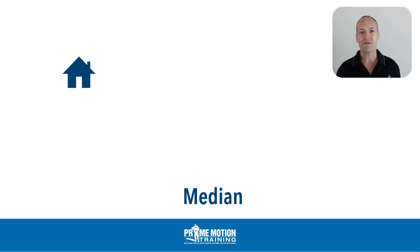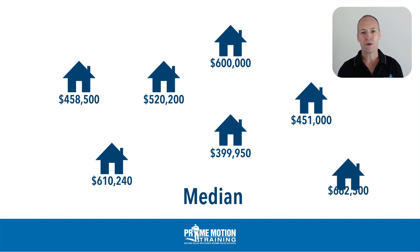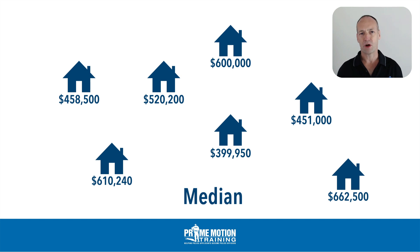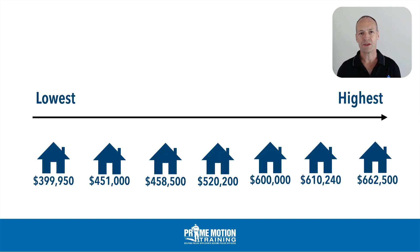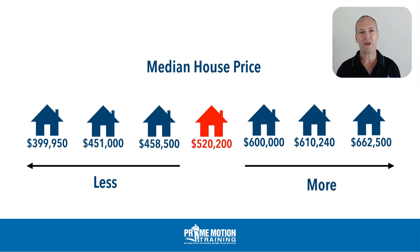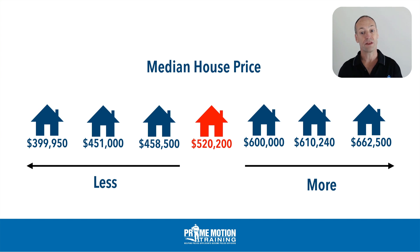We're going to start with the term median. If you've ever worked in the real estate industry, you're probably quite familiar with the term median. The question might ask you to look at a data set of sales figures for the real estate industry and determine the median price point. To determine the median, think of it as the middle — median means middle. What we need to do is first sort the prices from the lowest through to the highest. We can then determine the median or that middle point where just as many houses sold for less than this amount as sold for more than this amount. So you can see here in the middle, $520,200 — three houses sold for less than that and three houses sold for more than that. That determines the median, or that middle point.